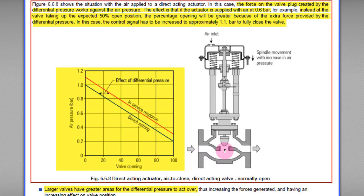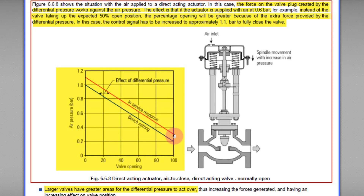When the process is running, differential pressure between upstream and downstream acts on the valve plug and tries to push it outward — working against the instrument air pressure. As a result, you need about 1.1 bar to start moving the valve. And instead of reducing pressure all the way down to 0.2 bar or 3 psi to fully open, you may only need about 0.3 bar to fully open the valve. This is the relationship between valve opening and air pressure for both reverse acting and direct acting actuators.